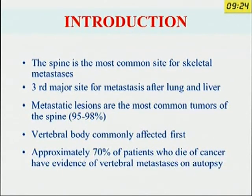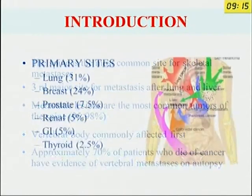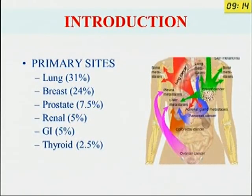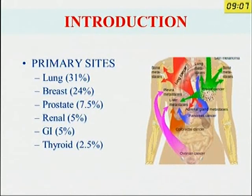The vertebral body is commonly affected. Approximately 70 percent of patients who died of cancer have evidence of vertebral metastasis at autopsy. The most important areas for the primaries are the lung, breast and prostate, followed by the renal, GI tract and thyroid.